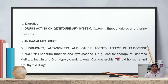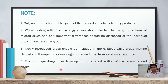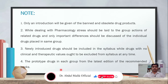Endocrine function and dysfunction topics include drugs used for the treatment of diabetes mellitus, insulin and oral hypoglycemic agents, corticosteroids, thyroid hormones and anti-thyroid hormones. Note: only an introduction will be given for banned and obsolete drug products, as explained in the previous syllabus video.